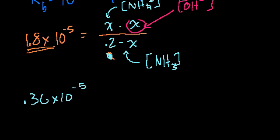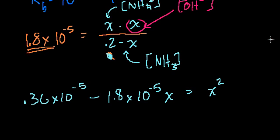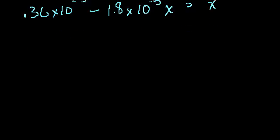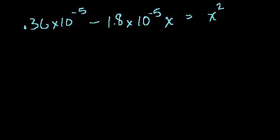But let's just multiply it. 0.2 times 1.8 is 0.36 times 10 to the minus 5. Right? 2 times 1.8 would be 3.6. So this is 0.36. Minus 1.8 times 10 to the minus 5x. Right? Is equal to that. x squared.